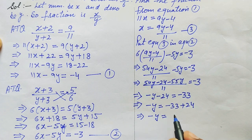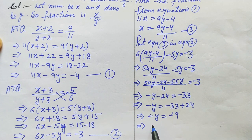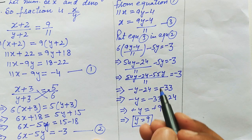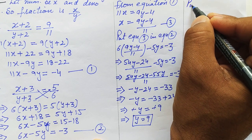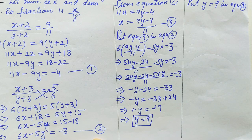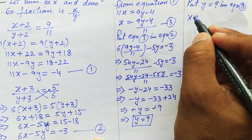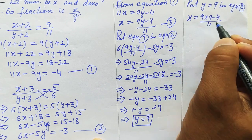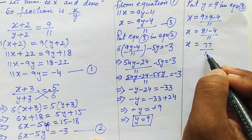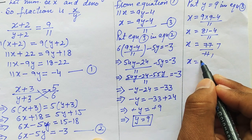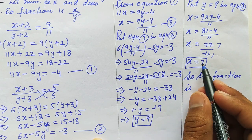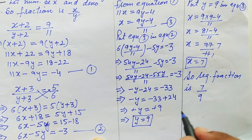Now we substitute y = 9 into equation 3: x = (9×9 − 4) over 11 = (81 − 4) over 11 = 77 over 11 = 7. So x = 7. Therefore, the required fraction is x over y, which is 7 over 9. This is our required fraction. This is how we solve this question. Thanks for watching.